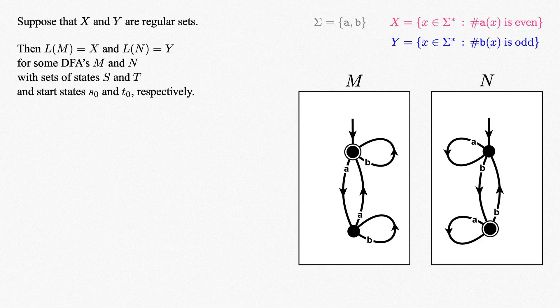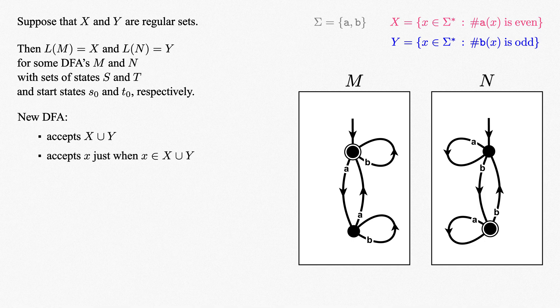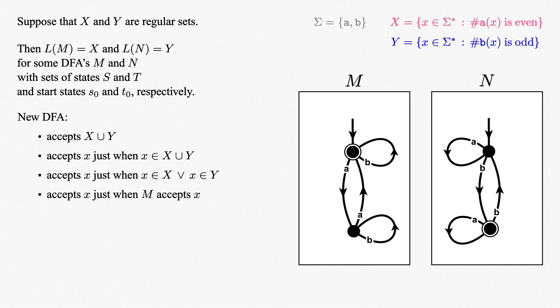To get a feel for what we're talking about, suppose that we want to show that x union y is regular. By definition, we somehow need to construct a DFA that accepts the set x union y — in other words, it accepts a string x just when x is in x union y. By definition of union, it accepts a string x just when it's in either x or in y. This suggests a plan: given a string x, our new DFA will need to run both machines on x, and accept x just when either one accepts x.